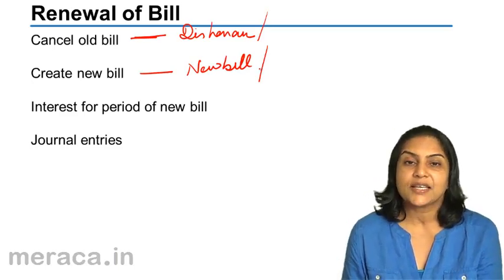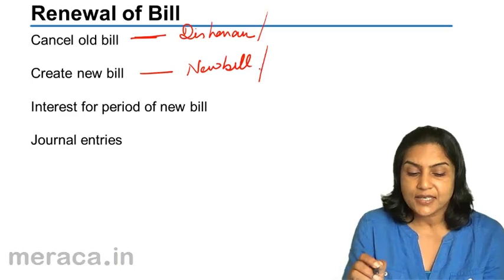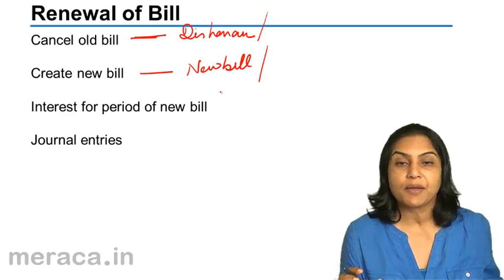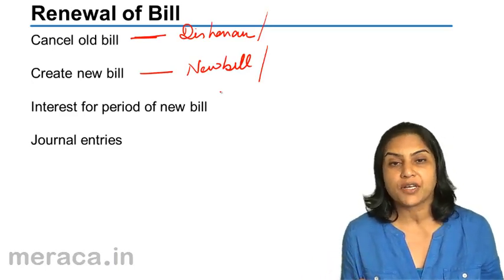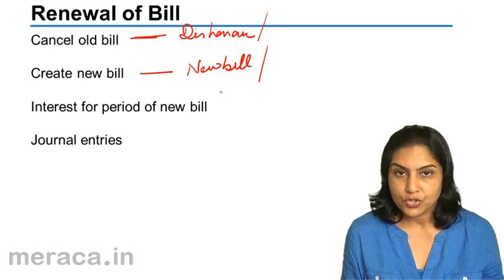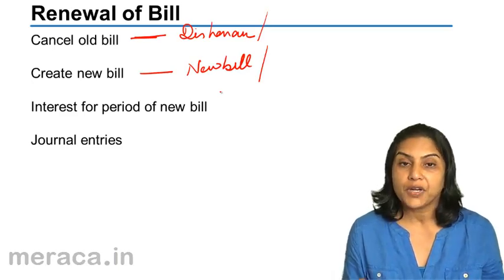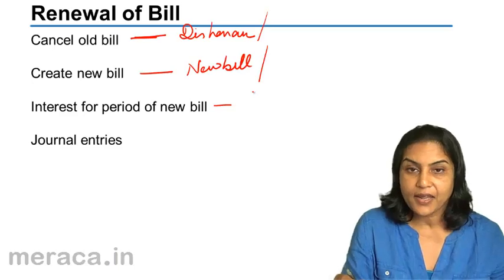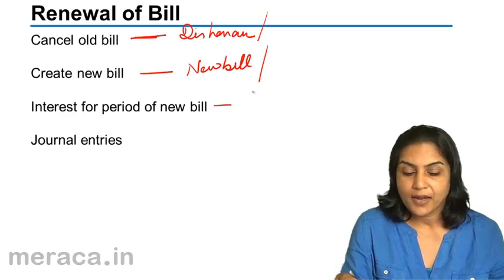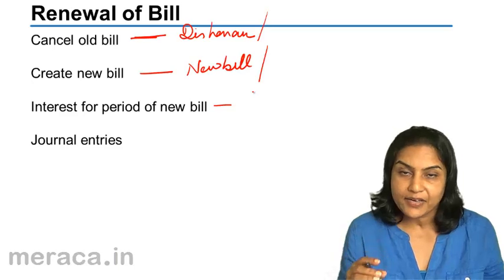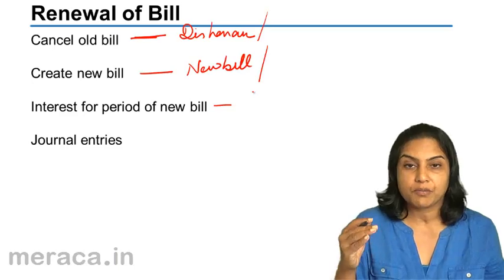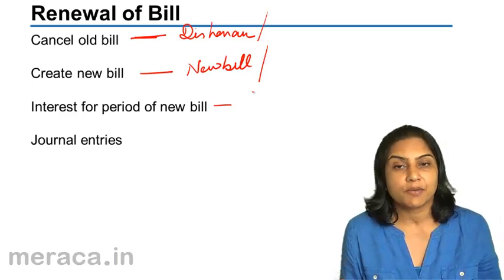The interesting thing here is that since a new bill is being created, it means the money will actually be received only after a certain period. So very often, interest for this extra period is charged. Therefore, we need to pass an entry for interest, making the interest due either receivable or payable, depending on whether we are in the books of the creditor or in the books of the debtor.